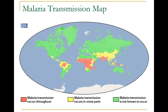Here we can see the transmission map of malaria. As you can see, most transmission occurs within the tropical areas, with a large proportion in sub-Saharan Africa and in South and Southeast Asia.